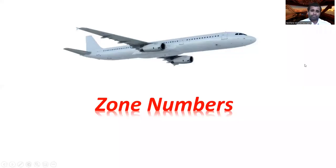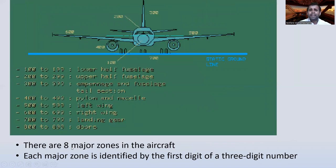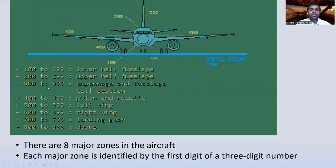Now we go to zone numbers. There are eight major zones in the aircraft. Each major zone is identified by the first digit of a three-digit number. Zones 100 to 199 are the lower half fuselage, 200 to 299 are the upper half fuselage, 300 to 399 are the empennage and nacelles, and 500 to 599 is the left wing area.